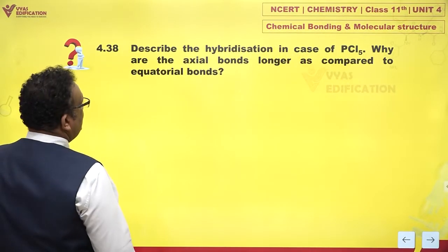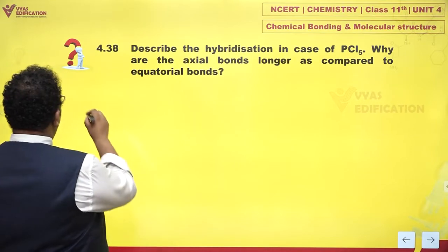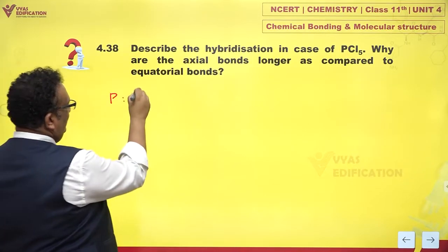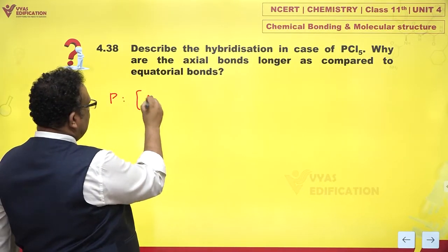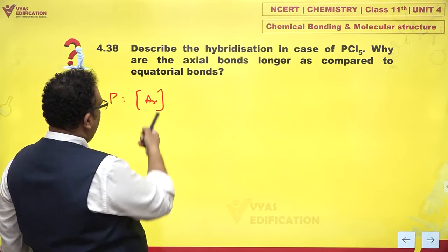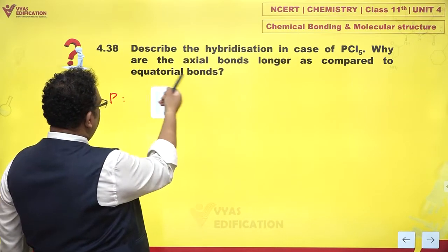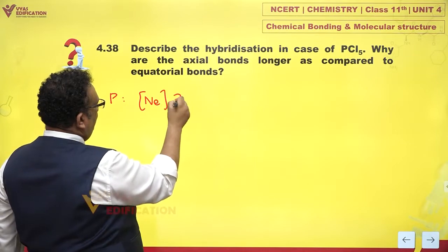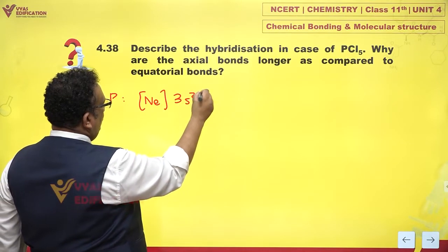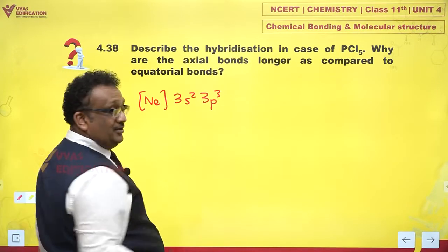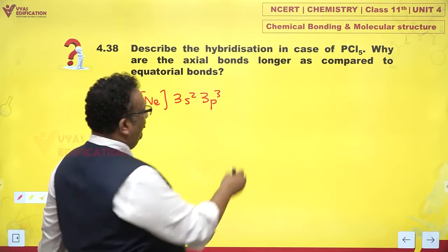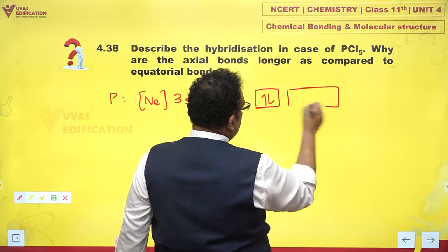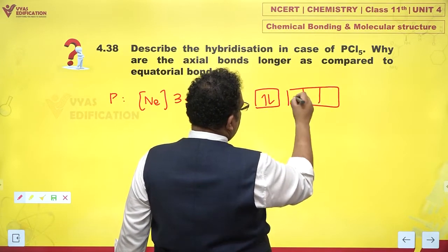Now, if you observe, first of all, PCl5 — take the phosphorus atom. Its configuration is neon, 3S2, 3P3. If you draw the box diagram, it is 3S2, 3P3 like this.